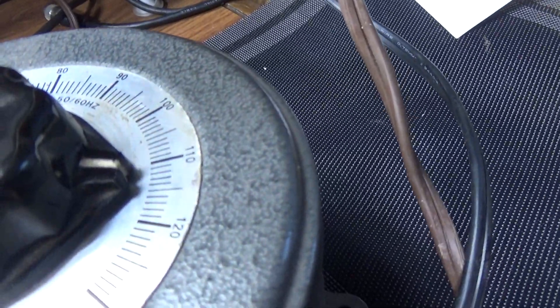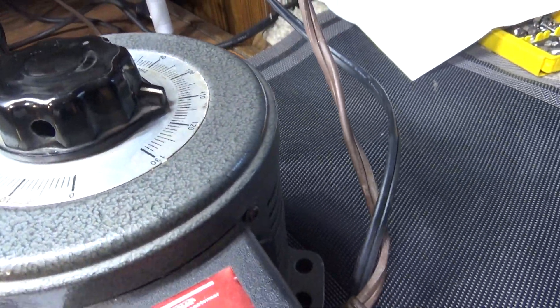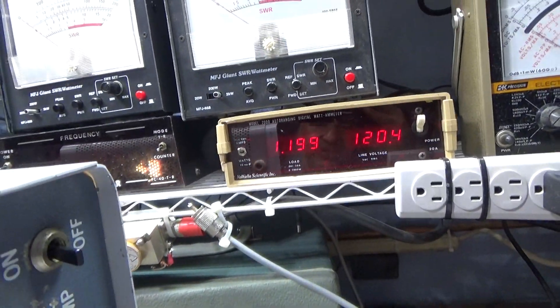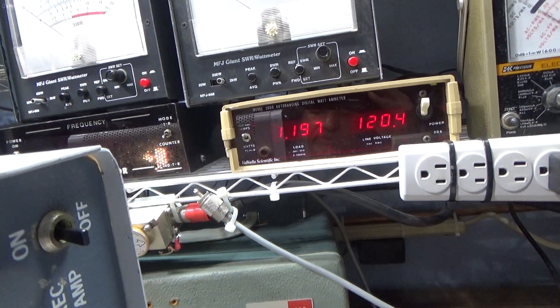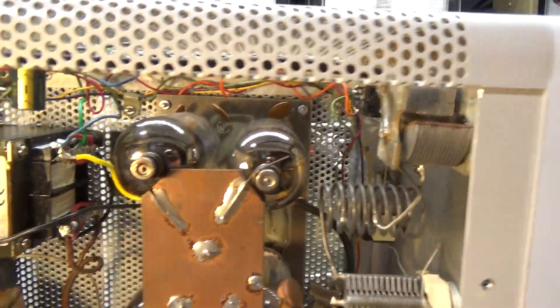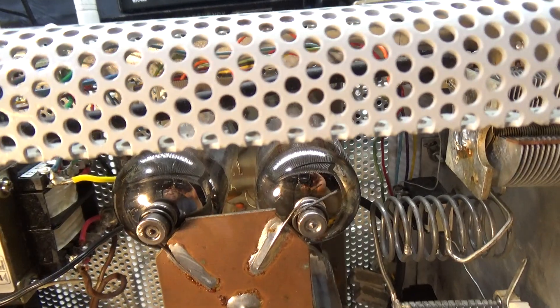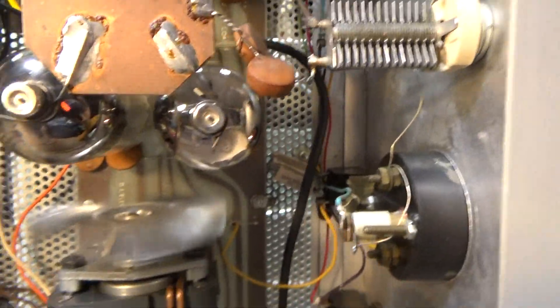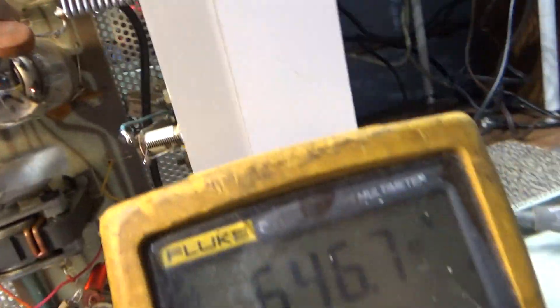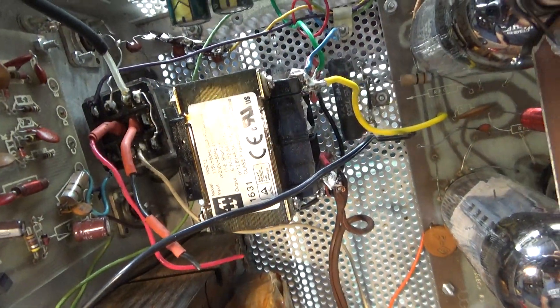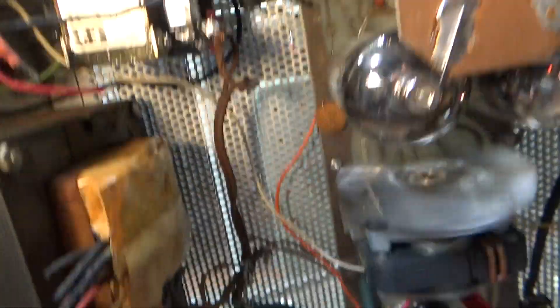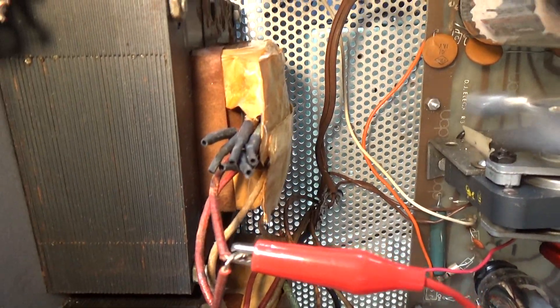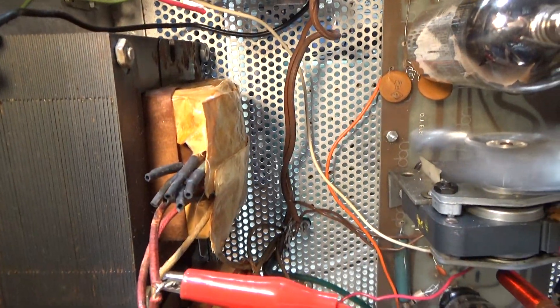I got the variac finally up to about 114, give or take. The amp's pulling about 1.2 amps. Like I say, the filaments are running—you can see them glowing in there. Fan's running.